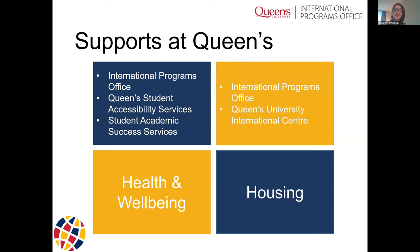In terms of logistics, your two main hubs will be our office — the International Programs Office — and the Queen's University International Center. Our office is your main connection to your home university while you're with us. The International Center can help you with any non-academic logistical concerns, such as cultural adaptation, health insurance, housing, and lots of other important things.